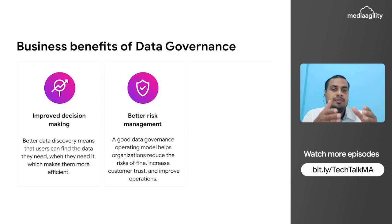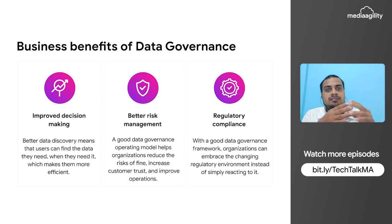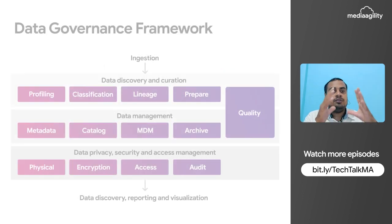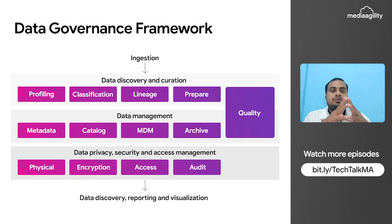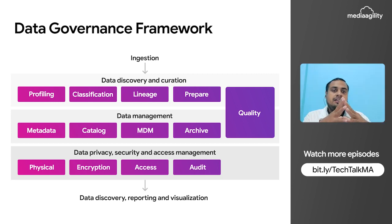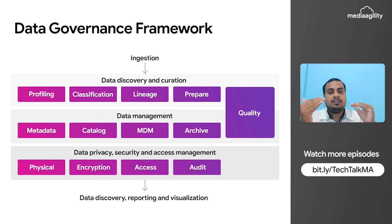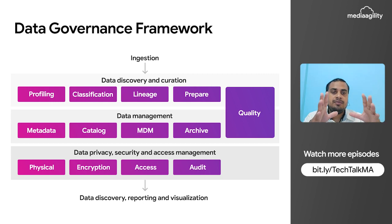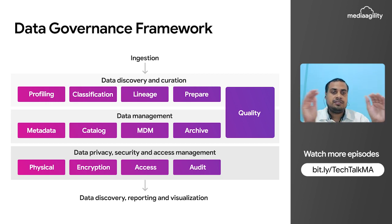So how can we implement data governance? First, data is ingested into a data lake, then we do profiling, classification, lineage, and we prepare the data to understand its quality. In further steps it moves to the data management section — metadata management, data catalog, MDM (master data management), and the archival process.